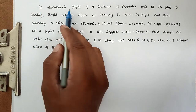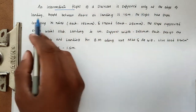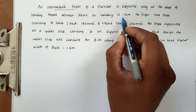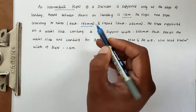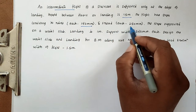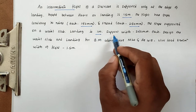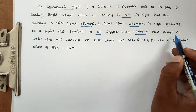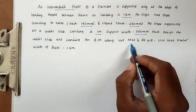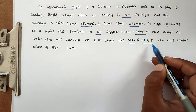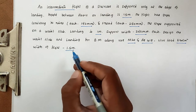The problem is an intermediate flight dog-legged staircase supported only at the edge of landing. Height between the floors or landing is 1.5 meter. The flight has steps with rise of 150mm each and tread of 250mm each. The steps are supporting on a waist slab. The landing is 1 meter and support width is 250mm. Design the waist slab and the landing for bending moment using M20 grade concrete and FE415 steel. Live load is 3 kN/m² and width of flight is 1.5 meter.